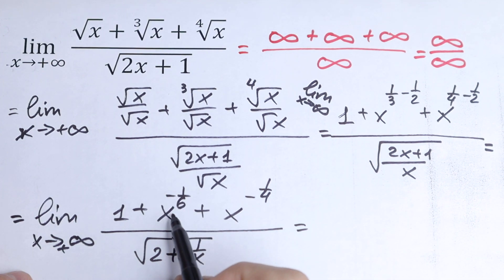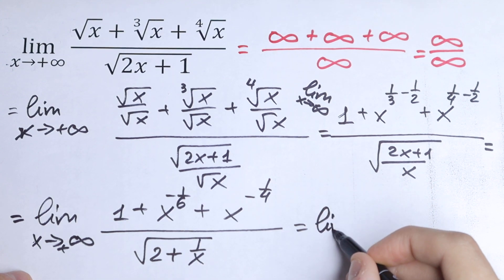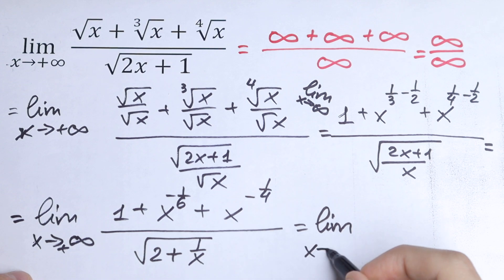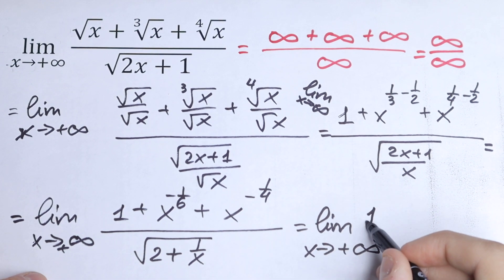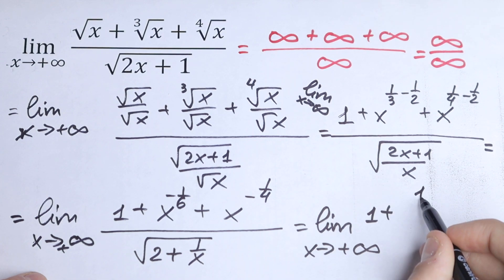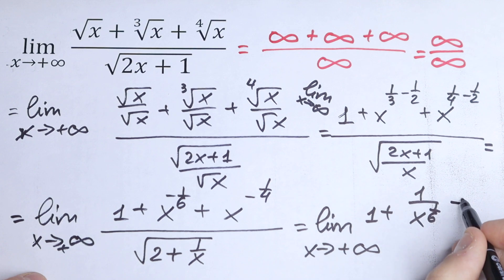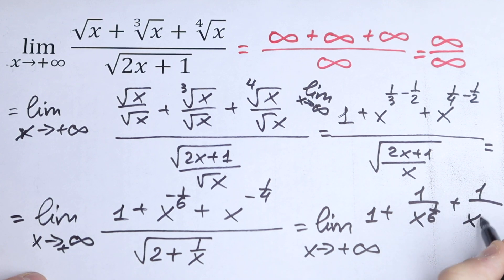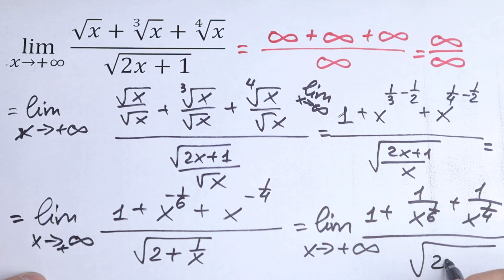Since we have negative exponents in the numerator, we can rewrite them with positive exponents in the denominator. So we can write this as: limit as x approaches plus infinity of one plus one over x to the power one-sixth, plus one over x to the power one-fourth, all over square root of two plus one over x.